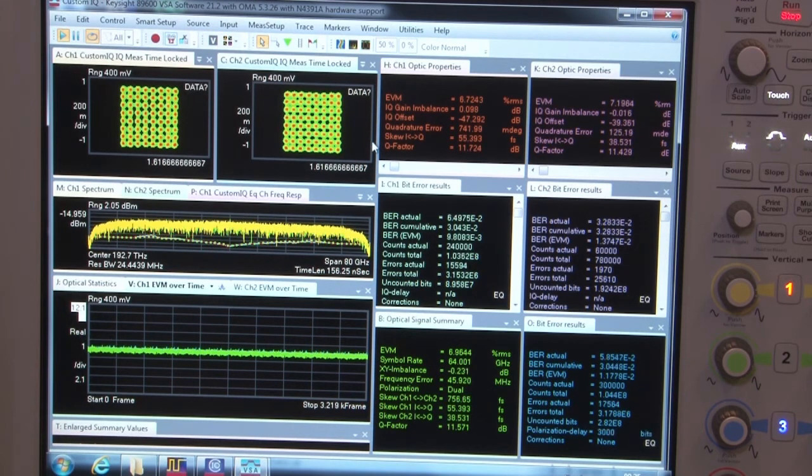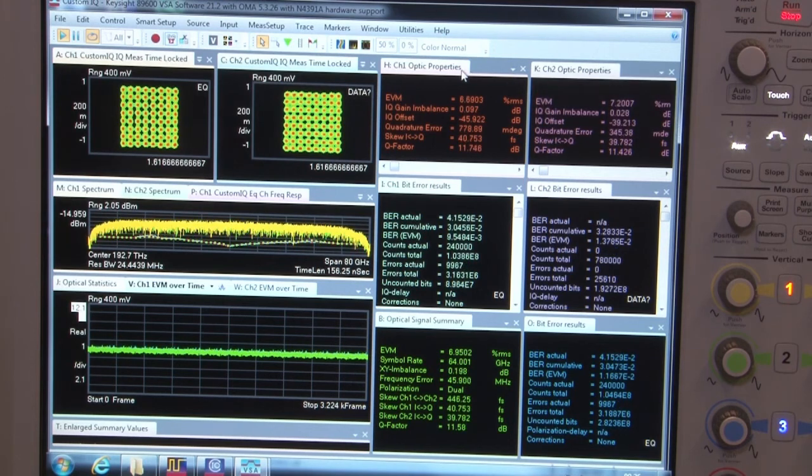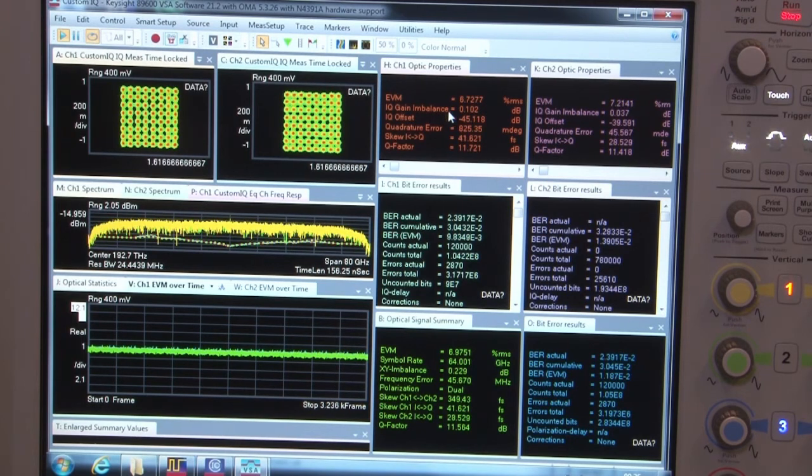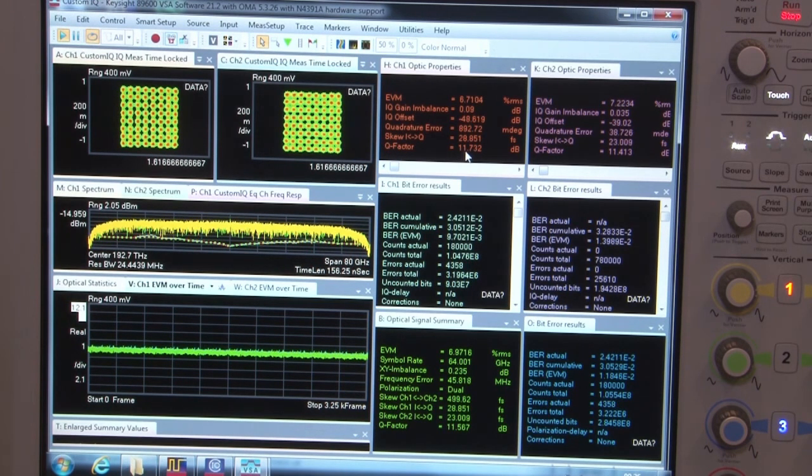On the right-hand side I have again in-depth analysis features for the channel 1 and channel 2. So the Y or X and Y polarization again. The error vector magnitude is reported. The gain imbalance, so the difference in amplitude for the I and Q. IQ offset is reported as well as the quadrature error. I can measure skew again here. And the Q factor is now shown individually for the two polarizations.